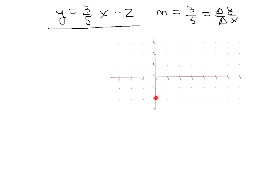So from this point here, the change in y is 3. I go up 3: 1, 2, 3. And the change in x is 5, so I go 1, 2, 3, 4, 5, right there. In other words, the point (5, 1), as well as the point (0, -2), must be on my line.